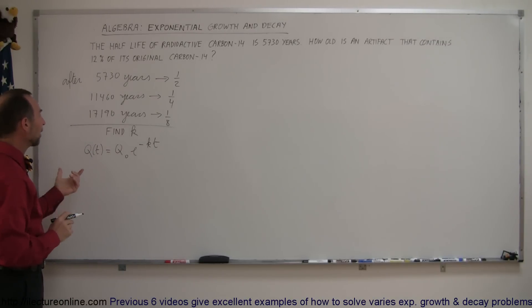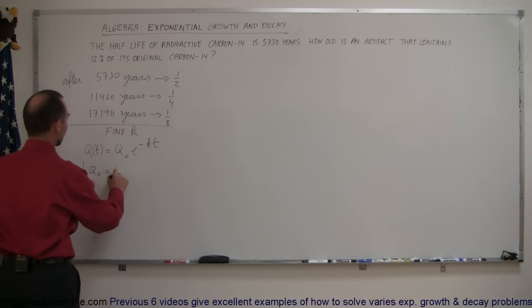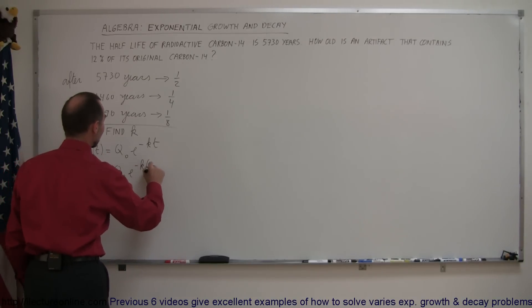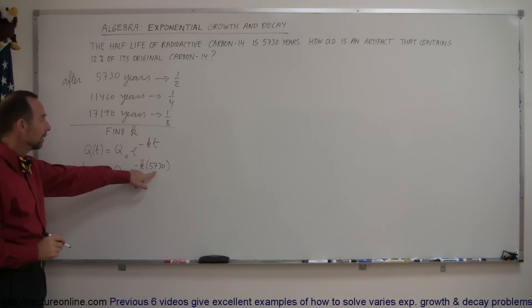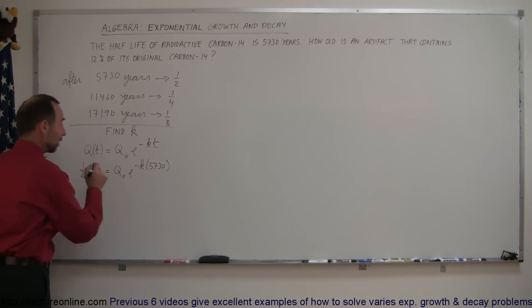So, we know that after 5,730 years, half of what we started with has been lost. So this becomes one half the original amount equals the original amount when t is 5,730 years, e to the minus k times 5,730. So that's what we do. We plug in the half-life for t, and we then put in one half the original amount for the final amount. And that will allow us to find the value for k.